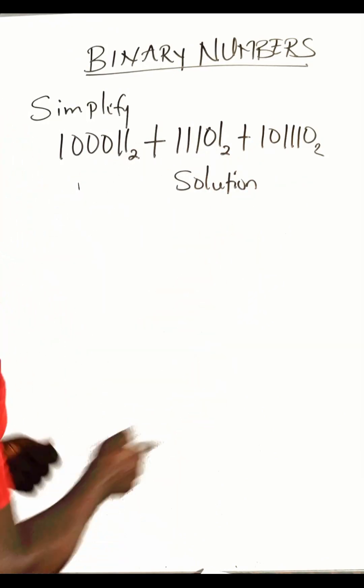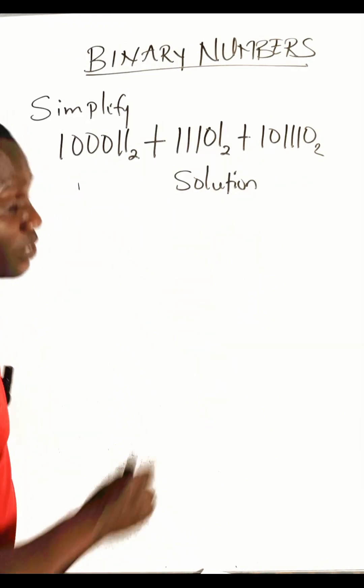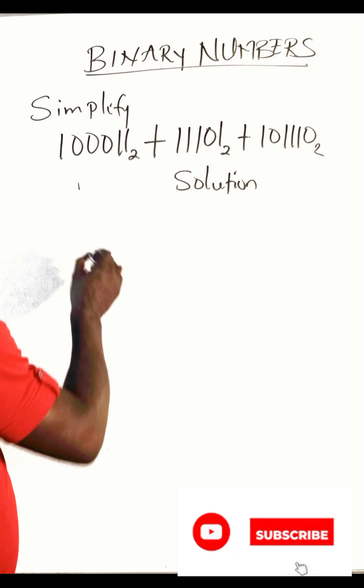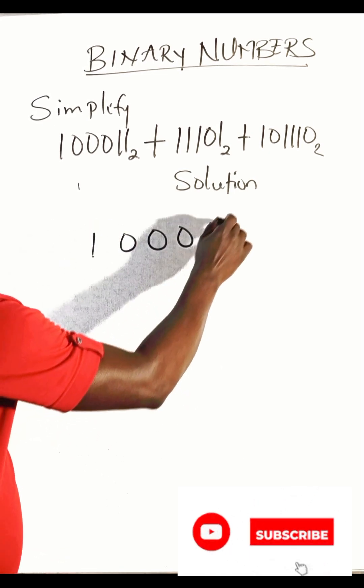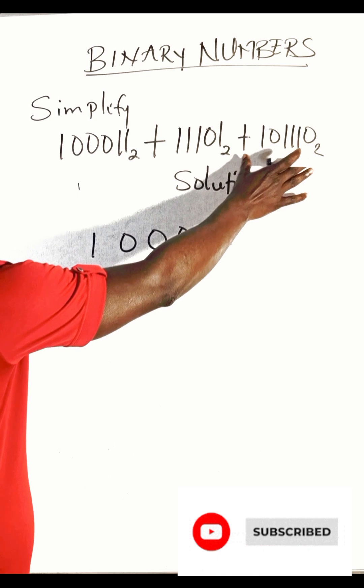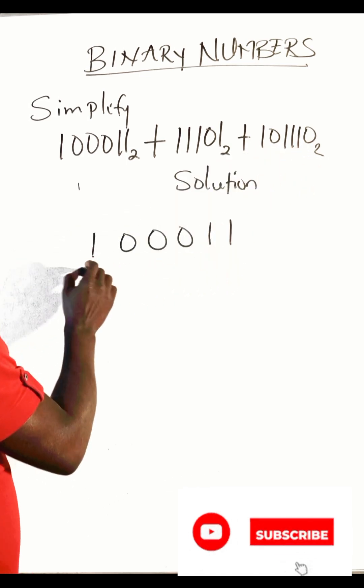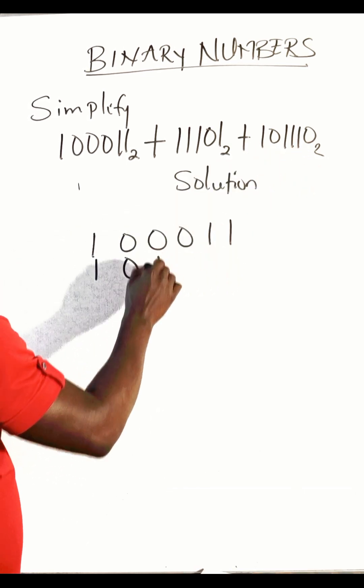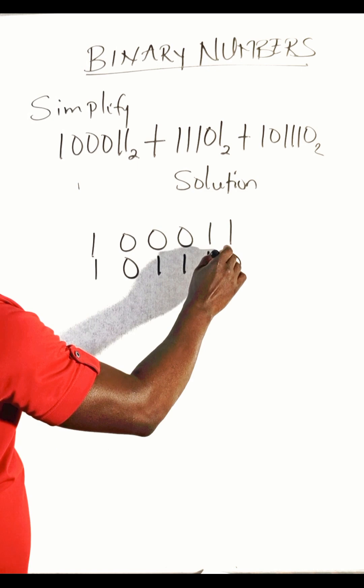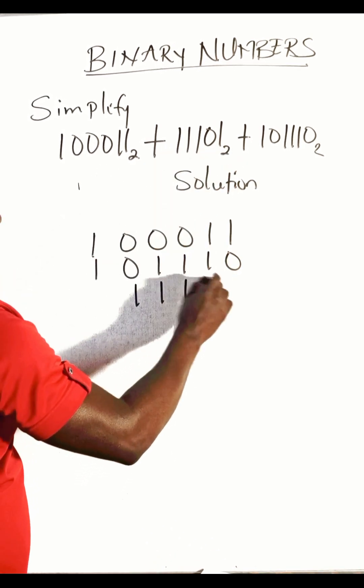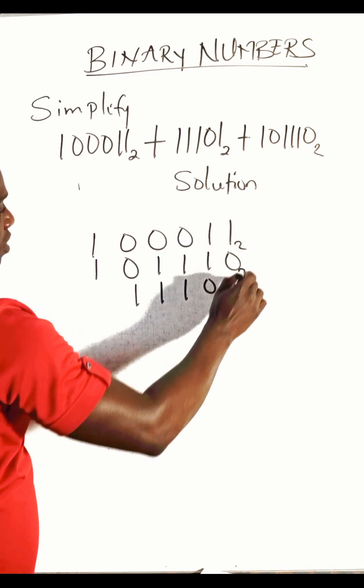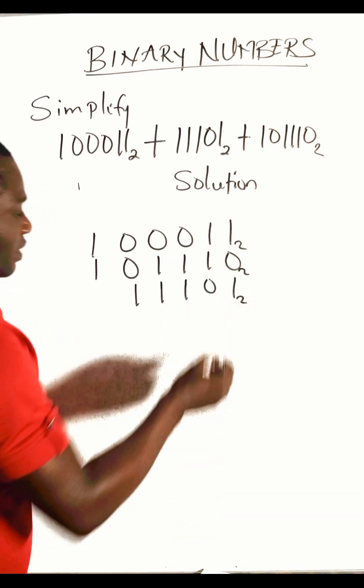To add these binary numbers, first of all we need to arrange these numbers. One zero zero zero one one, this should come under it: one zero one one one zero, and this will now come under it as one one one zero one. Remember, they are all numbers in base two.